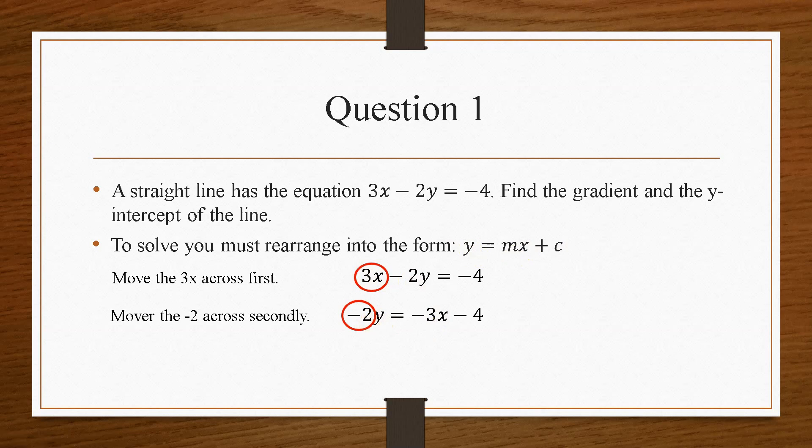that will go over as divide. So when we move that across, we end up with minus 3 over minus 2x plus minus 4 divided by minus 2. Now if we tidy this up, our final equation becomes y equals positive 3 over 2x plus 2.